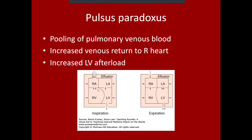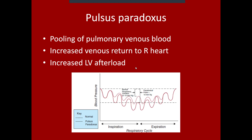You subsequently see bowing of the interventricular septum causing less ability for the left ventricle to fill. And there's increased left ventricular afterload because during inspiration with high negative pressure in the chest, the left ventricle is not as able to eject without using more force. These things together cause variation in cardiac output during the respiratory cycle.